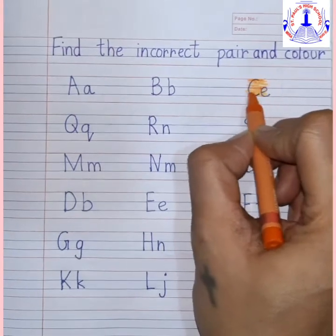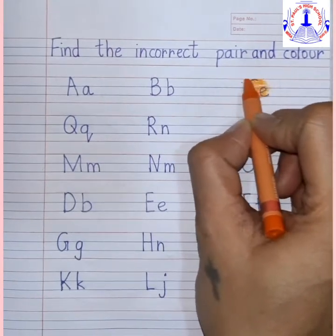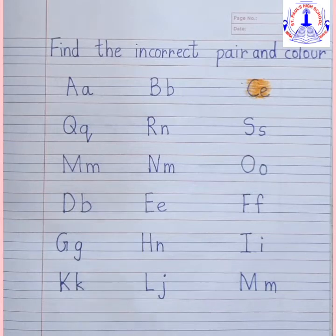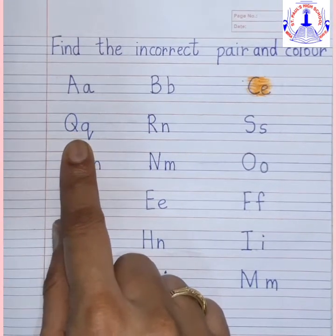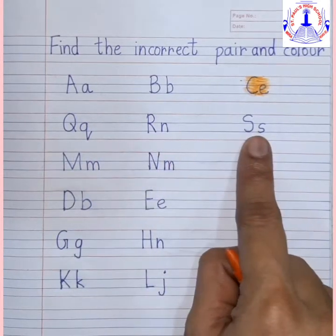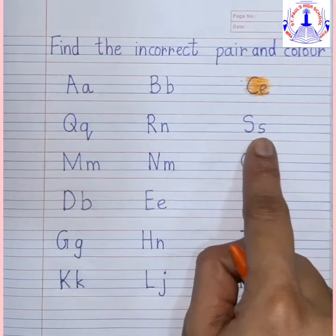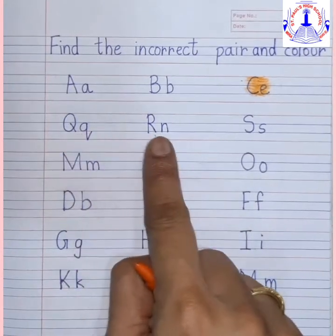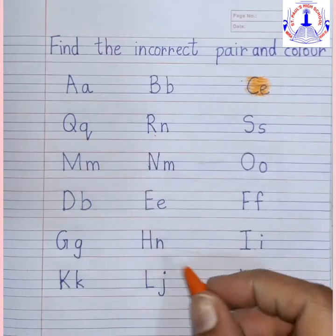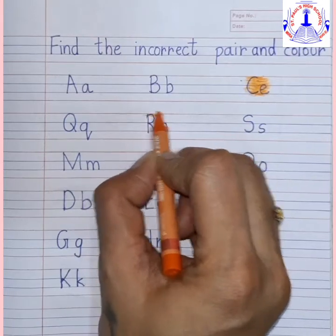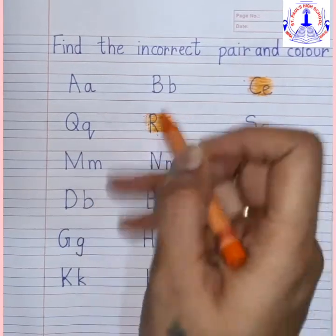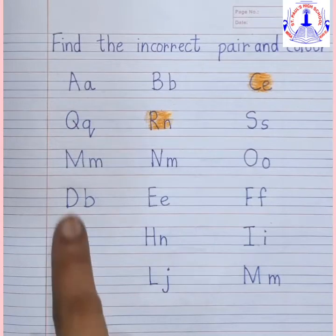Now in this row: capital Q, small q, capital R, small n, and capital S, small s. Which is the incorrect pair here? This is correct, this is correct. Here, small r should come with capital R, but here small n is there. So we have to color the incorrect pair — that is R with n.